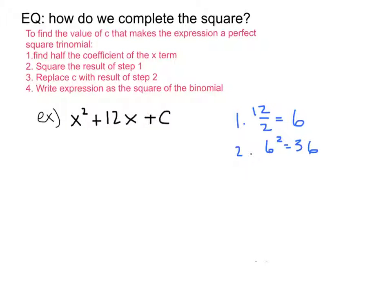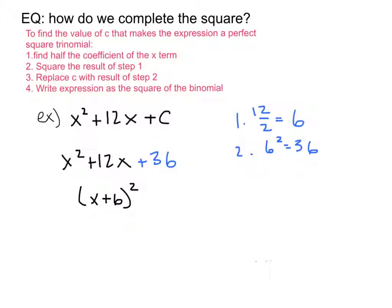Replace C with the result of step 2. So the value of C that makes the expression a perfect square trinomial is 36 — giving us x squared plus 12x plus 36. It's a perfect square trinomial because the two numbers that multiply to positive 36 and add to 12 are 6 and 6. So we can rewrite this as x plus 6 squared — that's writing the expression as the square of a binomial.